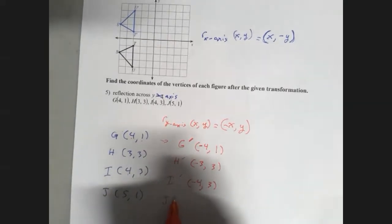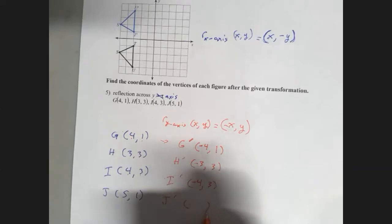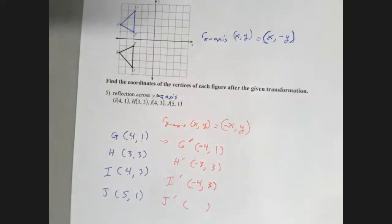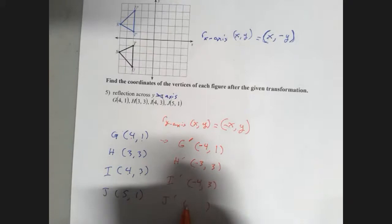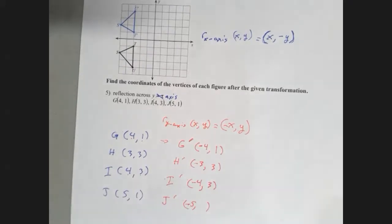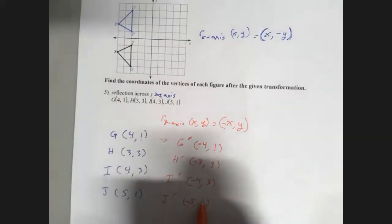And J prime is going to be the opposite for my x, negative 5. And the y value stays exactly the same, positive 1.